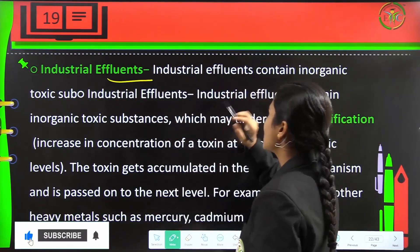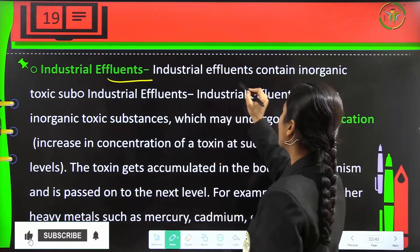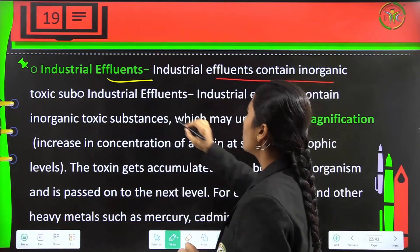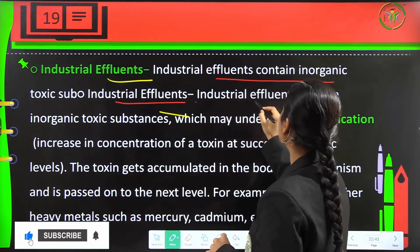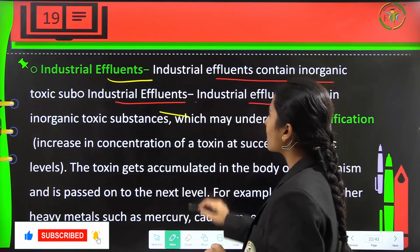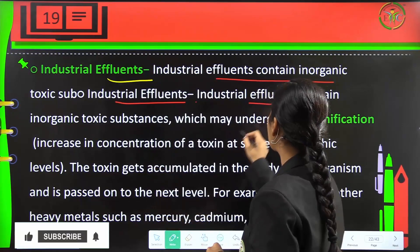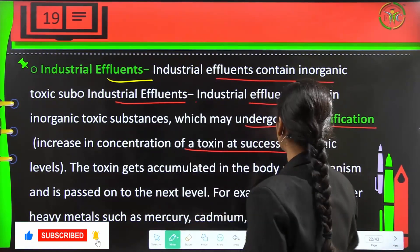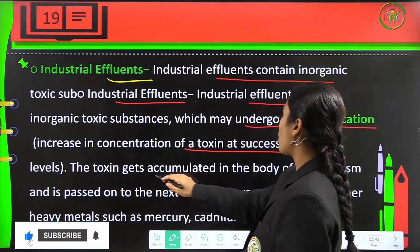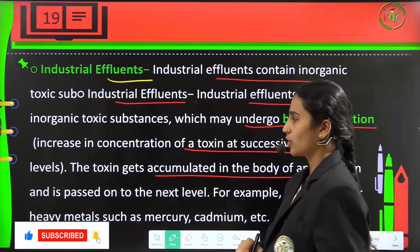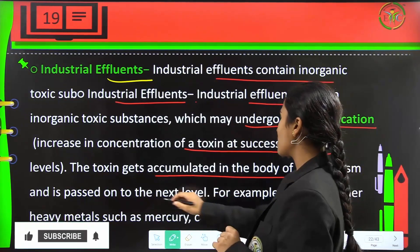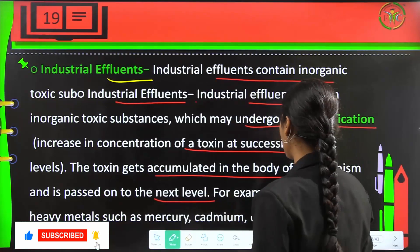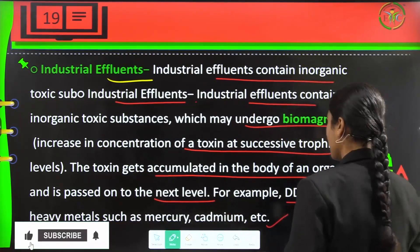Next is industrial effluents, which is the worst cause. Industrial effluents consist of inorganic toxic substances which may undergo biomagnification — the increase in concentration of toxins at successive trophic levels. These toxins get accumulated in the body of an organism and are passed to the next level. Examples include DDT and other heavy metals like mercury, cadmium, etc.